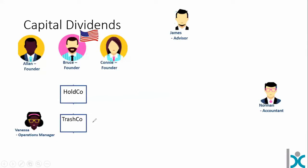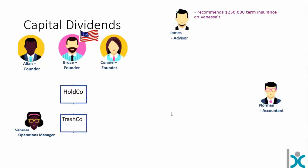We're a ways down the road with TrashCo now. Let's assume Alan, Bruce, and Connie have decided to hire an operations manager — Vanessa. James, their advisor, says: folks, have you considered the risk associated with the loss of Vanessa? She's in a fairly senior role, maybe with some profit sharing. James says, why don't you put in place some life insurance on her life — maybe a $250,000 term insurance policy on Vanessa's life, based on a needs analysis: what would it cost to lose her, to hire a replacement, for lost revenues, to outsource the job?